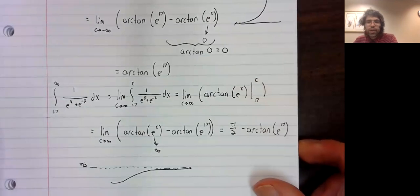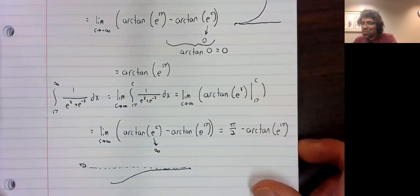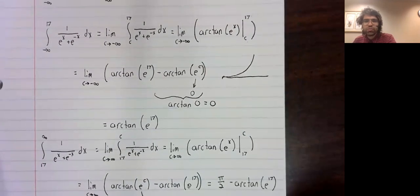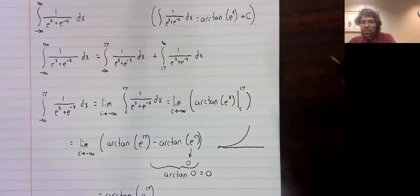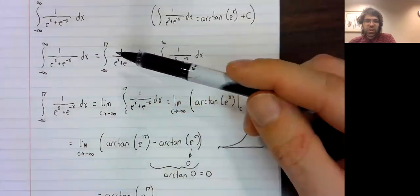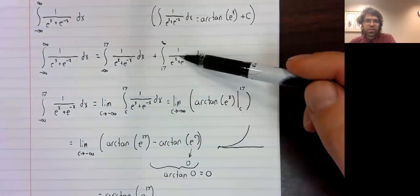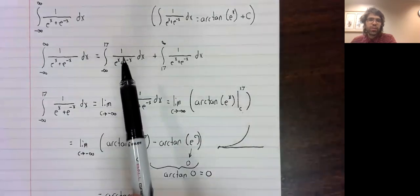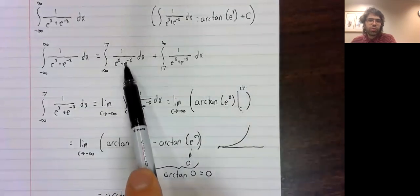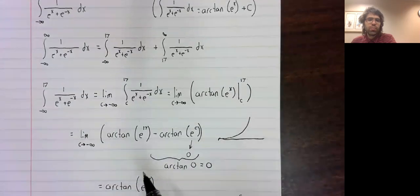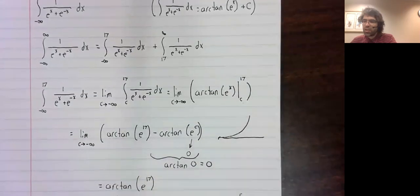And now we're running out of space, but we have completed this problem, essentially. We said that this equals this. We found that this integral was this arc tangent.